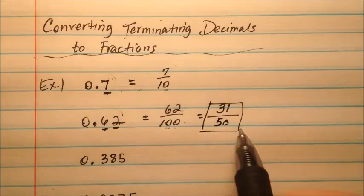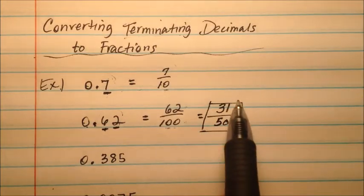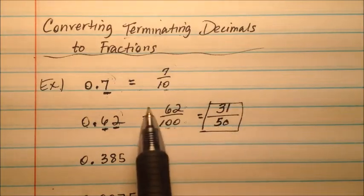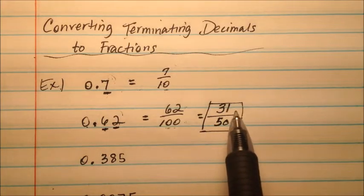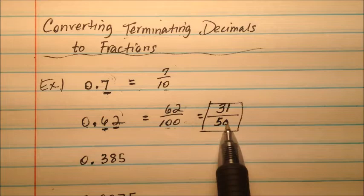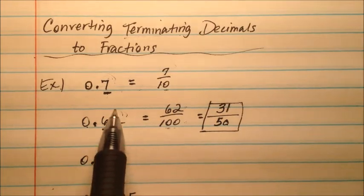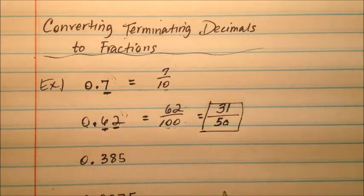So we'll have 31 over 50, which is nice, because when you have these fractions, if you want to verify that what you've done is correct, in your calculator or long division, you can go 31 divided by 50, and your calculator will give you 0.62.